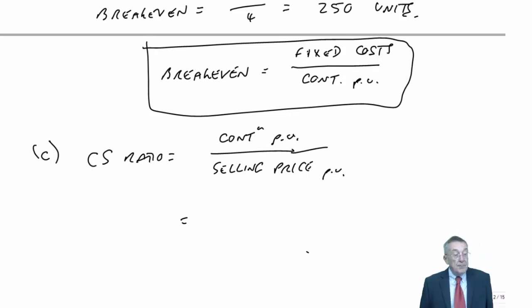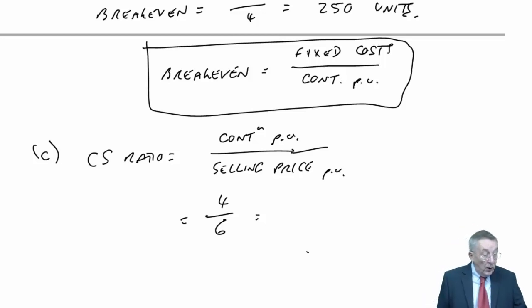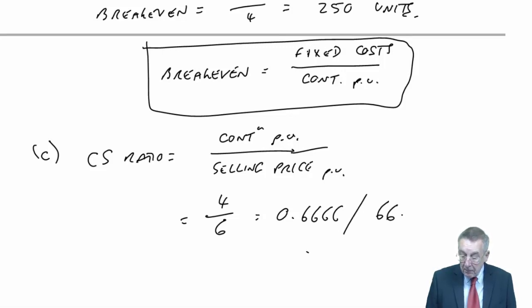In this example, the contribution was $4 per unit, the selling price was $6 a unit, which is two-thirds, or 0.6667, or 66.67%.